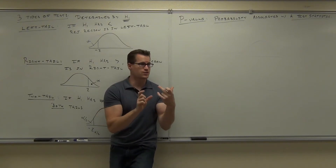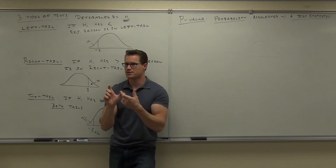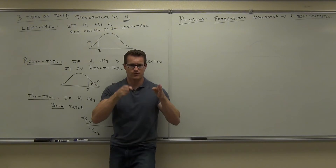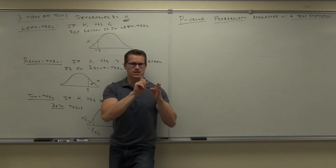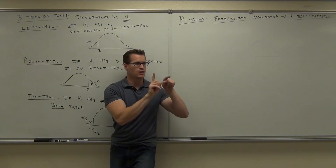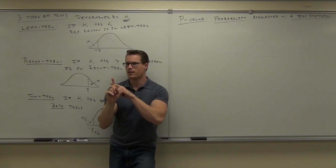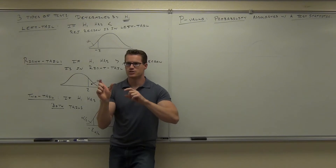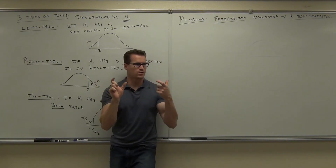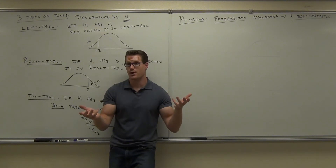If the area is smaller than your significance level, you know it's rare enough to reject the null hypothesis. So there are two ways of looking at it. Traditional has critical values and you look where your test statistic falls. P-value says you take your test statistic, look up the area, and compare that area to alpha. If it's smaller, you reject. If it's not smaller, you don't reject.